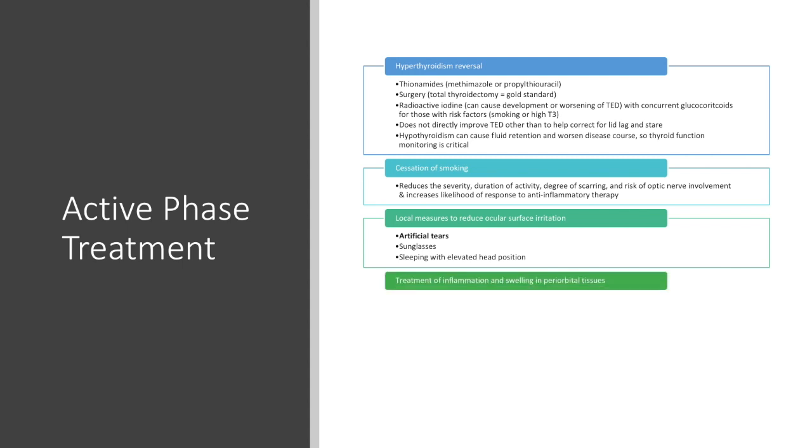Treatment of inflammation and swelling in the periorbital tissues can be managed with corticosteroids if severe enough, although clinicians should use with caution, as the side effects are often worse than the disease symptoms. Steroids are usually reserved as a temporizing measure in patients with compressive optic neuropathy until surgical decompression of the orbit is performed, or orbital decompression surgery in which the roof, lateral wall, or medial wall of the orbit is removed.